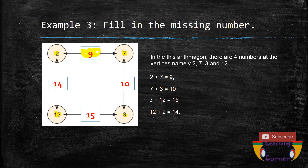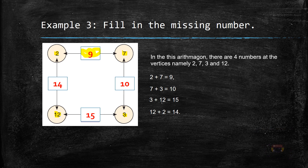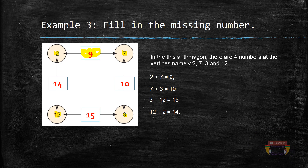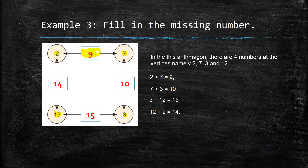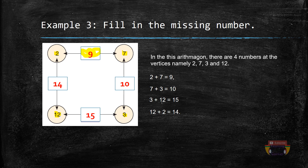To find the numbers at the vertices when they are missing, first find the number in the middle by adding the edge numbers and dividing by 2, then use it to find the numbers at the vertices by subtracting the number in the center from the number on the edge. To find the number on an edge, add the numbers at the vertices and put the answer between those two vertices.